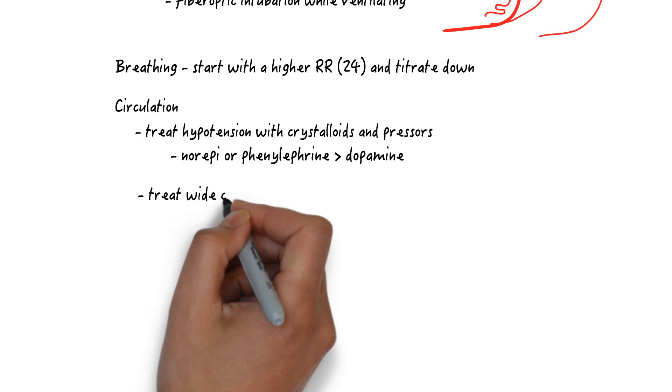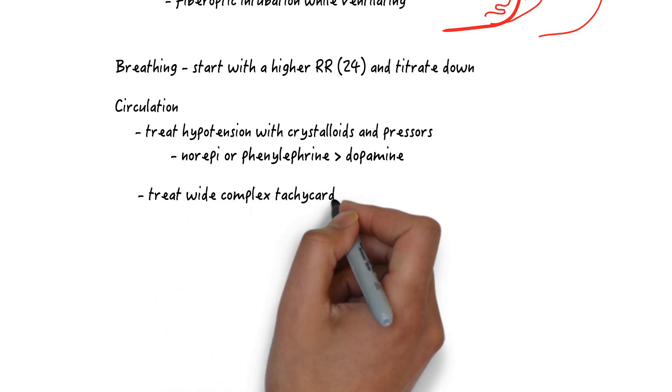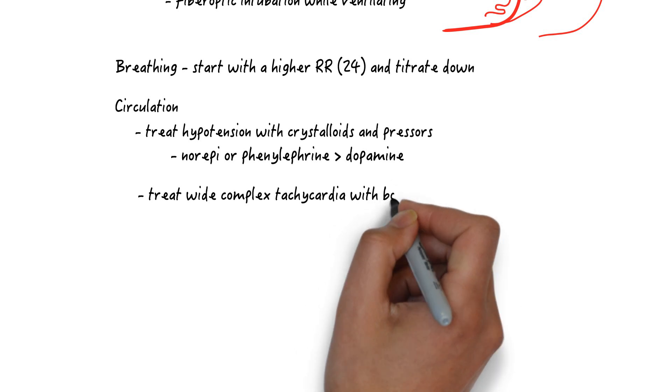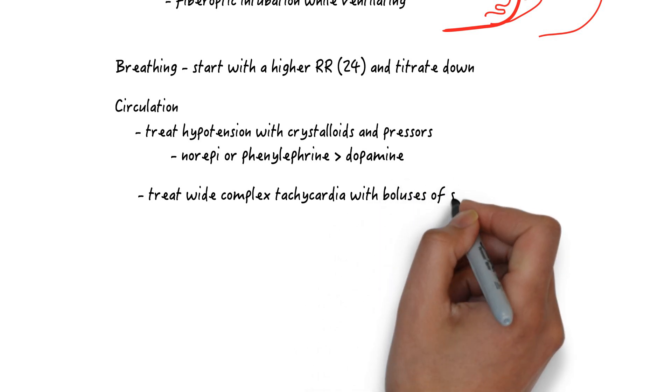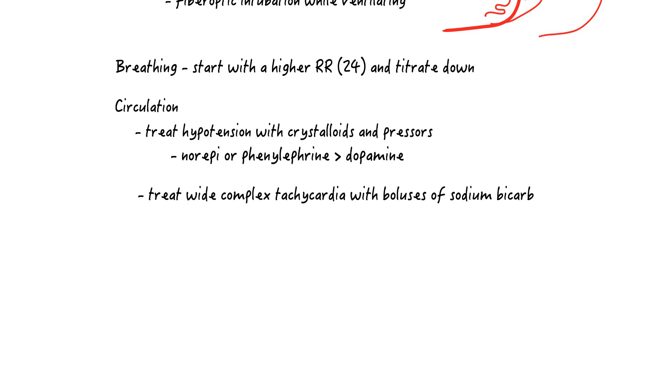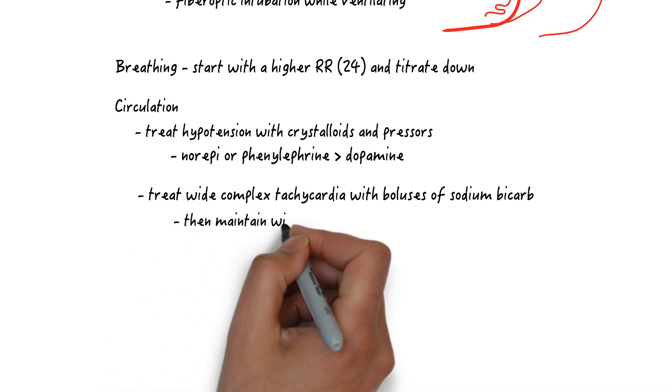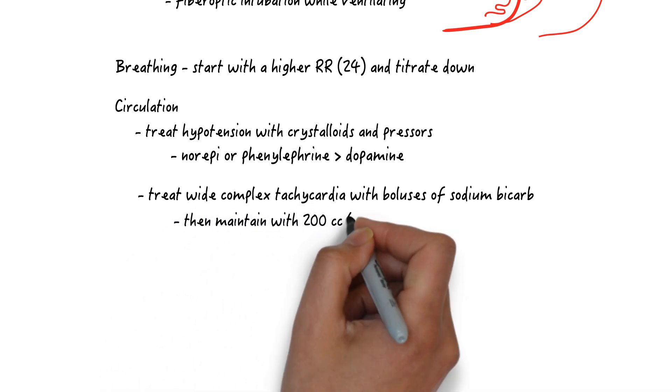For wide complex tachycardia, which is driven by sodium channel blockade, give 3 amps of sodium bicarbonate and increase the ventilation as already mentioned. Think ahead and prepare a bicarbonate drip. Mix 3 amps of sodium bicarbonate with 1 liter of D5 water and infuse that at a rate of 200 cc per hour.